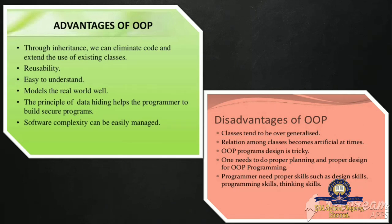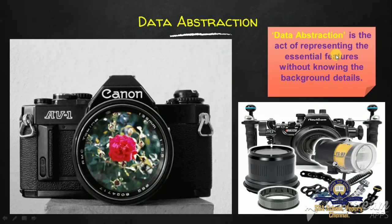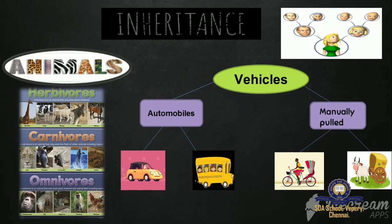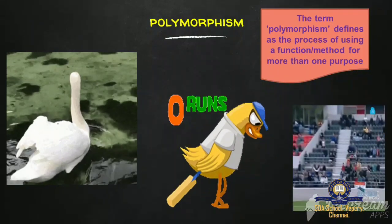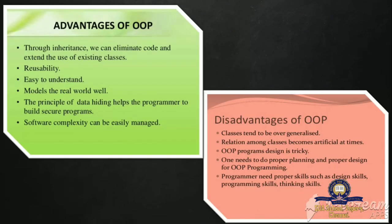Now it's time to end this session. In this video, you learned about data abstraction — the act of representing the essential features without knowing the background details. You also learned about encapsulation, inheritance — the term inheritance means to link and share some common properties of one class with another class, and this can be done by extending the object of one class into another — and polymorphism, which defines as the process of using a function or method for more than one purpose. Finally, you learned about advantages and disadvantages of object oriented programming language.